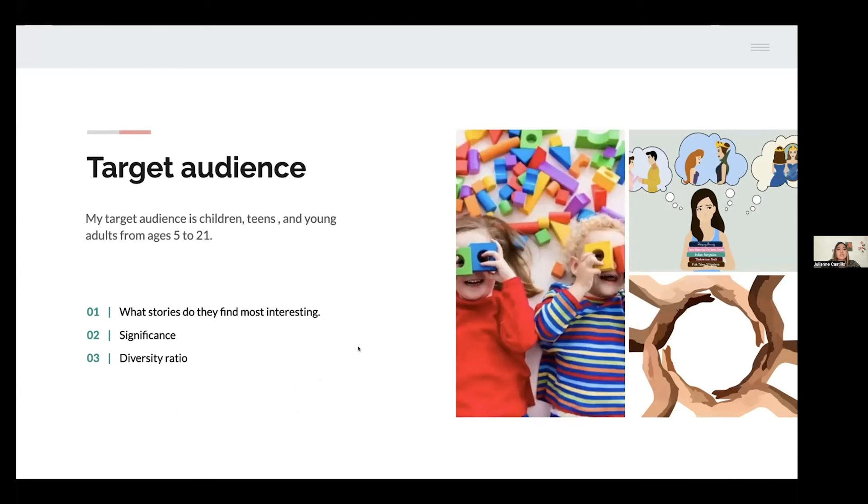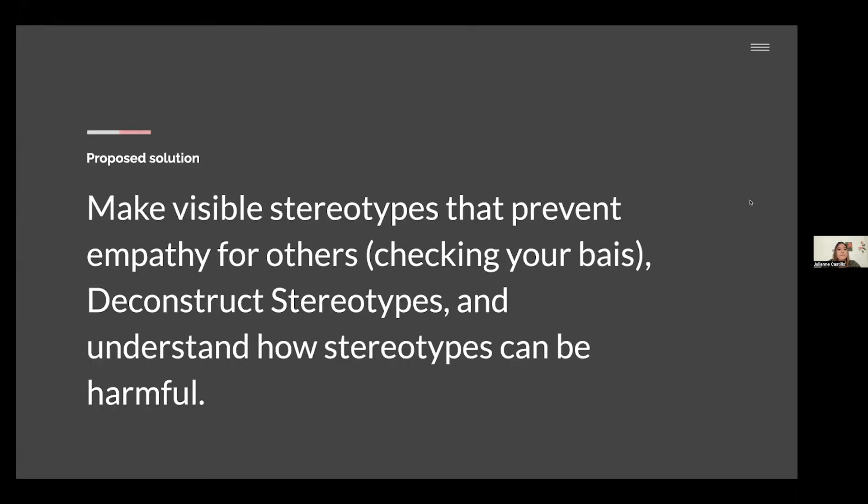I'm interested in what stories they find most interesting, if they hold any significance to them, and if there is a diversity ratio, specifically with the characters and their development. For my proposed solution, I want to make visible stereotypes that prevent empathy from others, so for you to be able to check your bias, to deconstruct stereotypes and understand how stereotypes can be harmful.